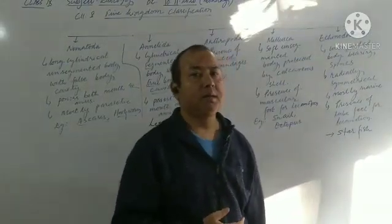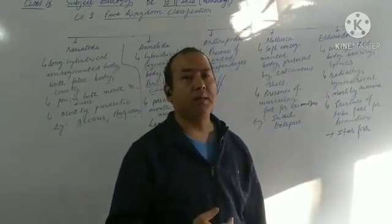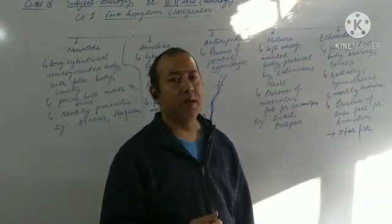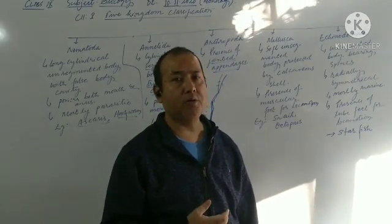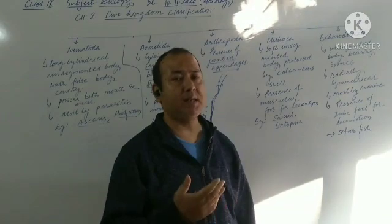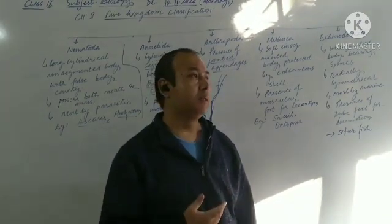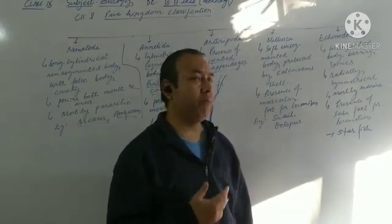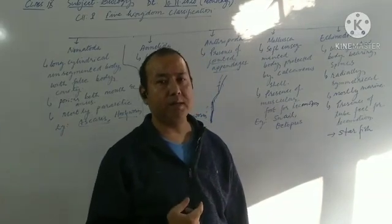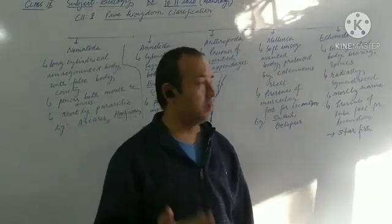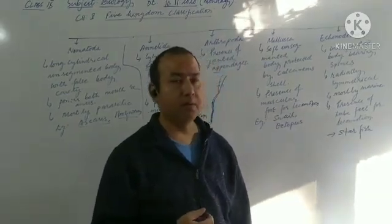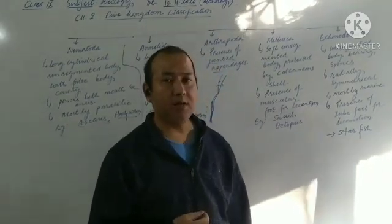Next comes Vertebrata. Different groups of vertebrata we will be discussing. In vertebrata, we have to learn about five different classes under the group vertebrata. Starting from Pisces, Amphibians, Reptilia, then again after that comes Aves, and then finally Mammals, Mammalia. So let us, I will be explaining that in the next video. In this video, this much. Thank you students.